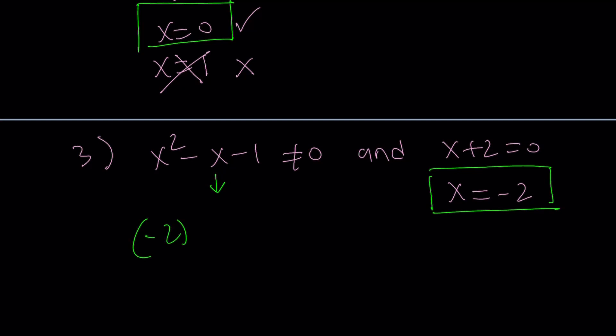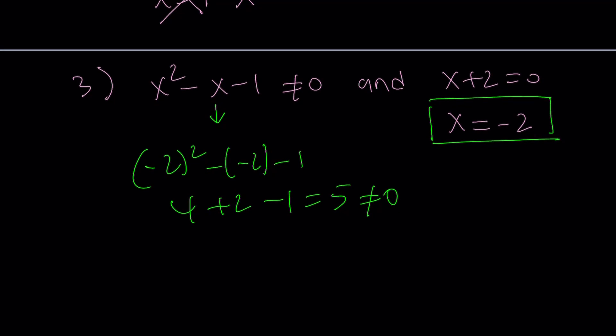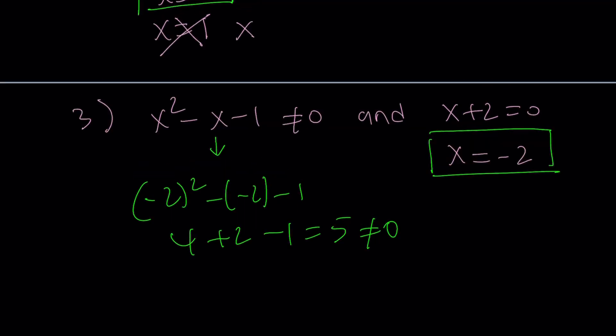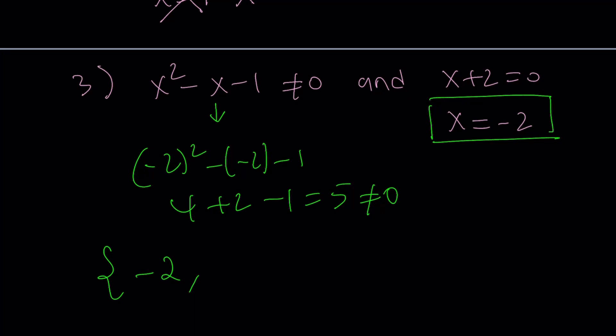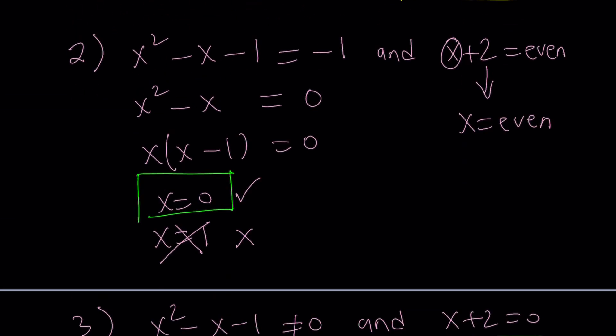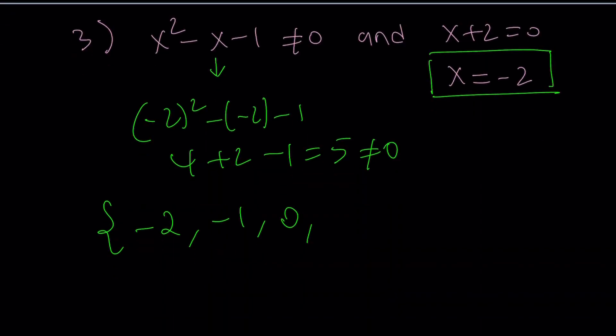So if you plug in negative 2, negative 2 squared minus negative 2 minus 1 is 4 plus 2 minus 1, and that is equal to 5. Obviously, 5 does not equal 0. But you could also solve this equation as a quadratic and find the x values, which we're going to take a look at later. So those are the solutions so far. Looks like we got four solutions. Let's go ahead and write them all. So the smallest one we got was negative 2, and then we got negative 1, and then we got 0 and 2. Looks like we got four solutions, but let's go ahead and take a look at the graph.